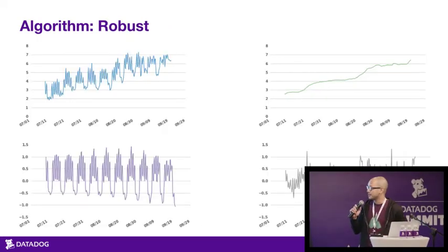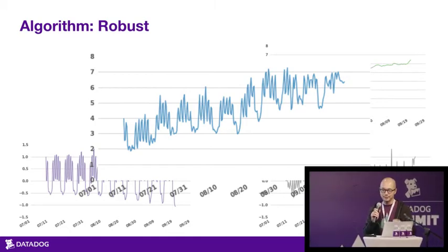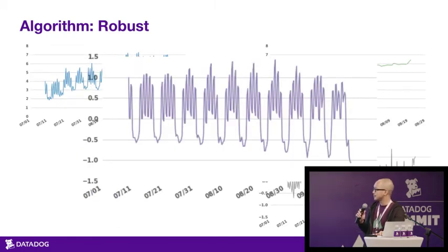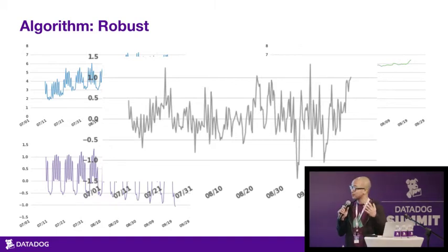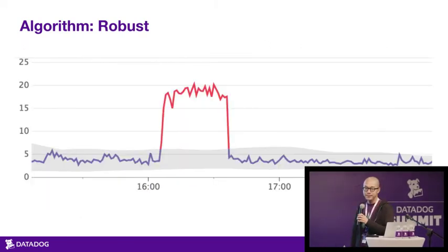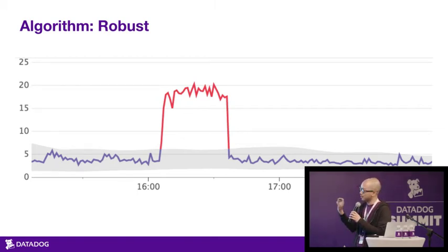Our first non-basic algorithm is called Robust. We take a page from classical time series analysis: we take the original metric, decompose it into a trend component and a seasonal component, which leaves us with some noise. That gives us the model for what we consider normal behavior. The Robust algorithm lives up to its name — here's an anomaly that lasts about half an hour, and notice how the band just doesn't budge. It knows normal is down here, and even though there was anomalous behavior for half an hour, it continues saying normal behavior is at that level.